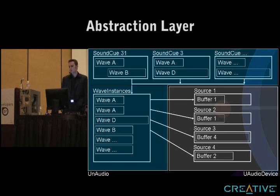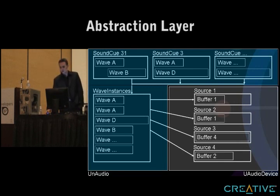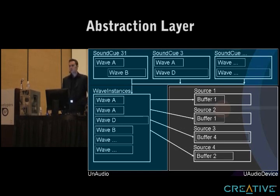We have looping nodes, oscillators, and things like that. So at runtime, the sound cue is the combination of everything you see on the screen. The waves are the raw data on the right, the nodes in the graph. And once we start playing them, we create instances for each wave.